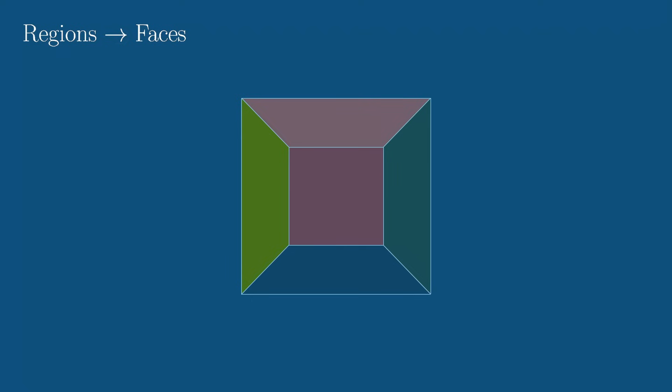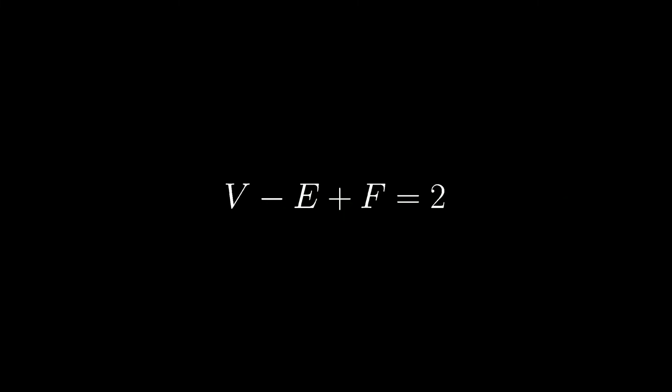Because Euler was originally talking about 3D polyhedra when he found this formula, which was only later reframed in terms of planar graphs, instead of saying dots, we say vertices, instead of saying lines, we say edges, and instead of saying regions, we say faces. Hence, we write Euler's discovery as V minus E plus F equals two.